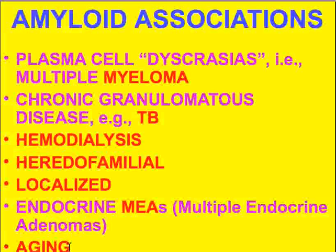I probably have a little bit more amyloid in my blood vessels than you do, unless you're 61 years old, because amyloid normally builds up in blood vessels with aging. So you can't always think of amyloid as something unrelated to the normal aging process.